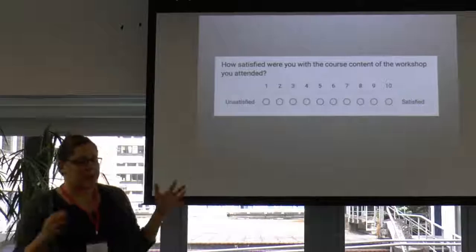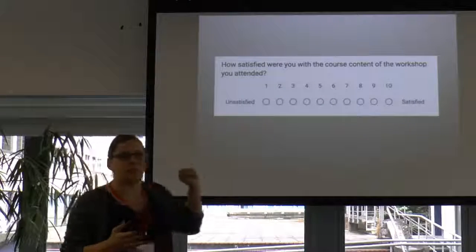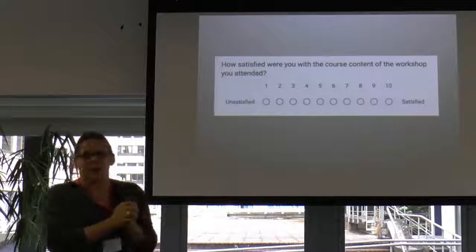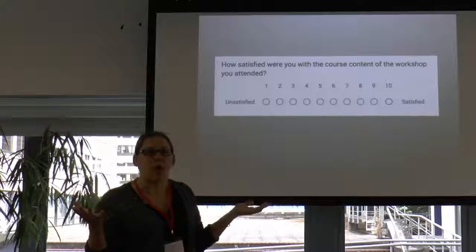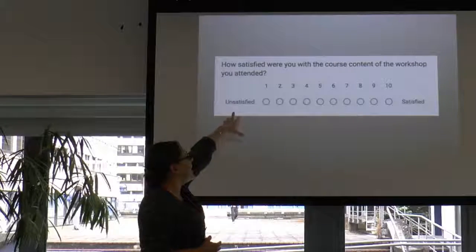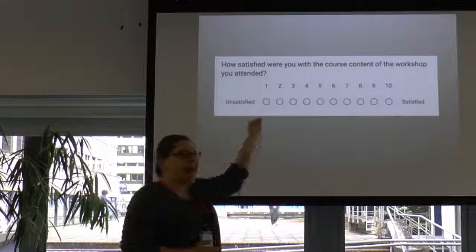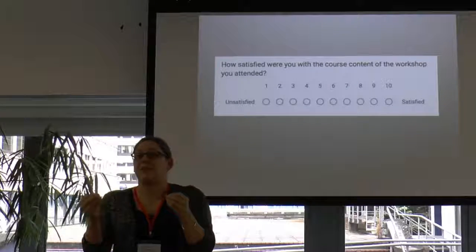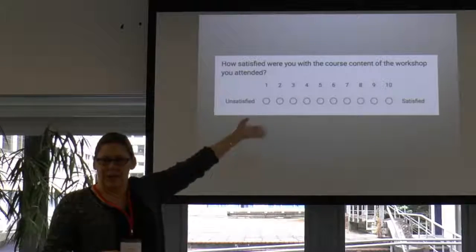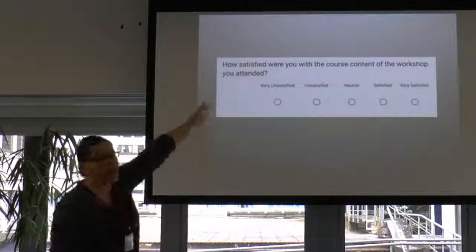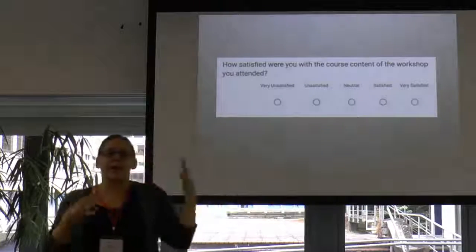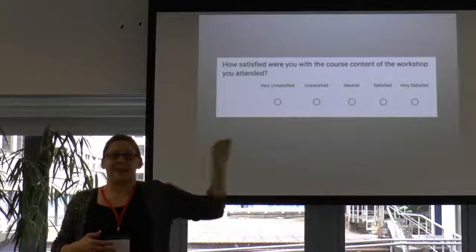Let's take a simple question you might ask about a workshop, drawn directly from a study of Software Carpentry: 'How satisfied were you with the course content of the workshop you attended?' The answer or data collected is on a scale — one to ten. This is asking somebody to give you a commensuration, to create a number for you. Alternatively, you could ask them to pick a category: very unsatisfied, unsatisfied, neutral, satisfied, or very satisfied.